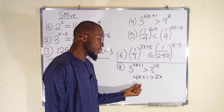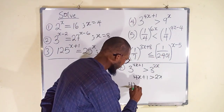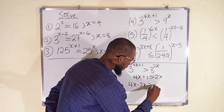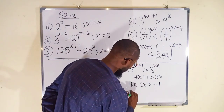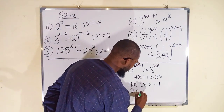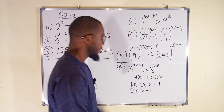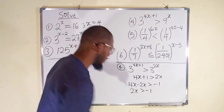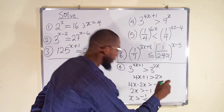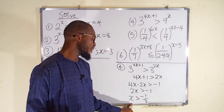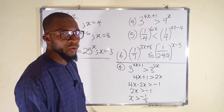Bring the 2x to the left and take positive 1 to the right: 4x minus 2x is greater than negative 1. That gives 2x greater than negative 1. Divide both sides by 2: x is greater than negative 1 over 2.